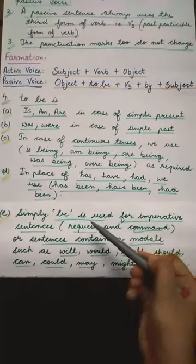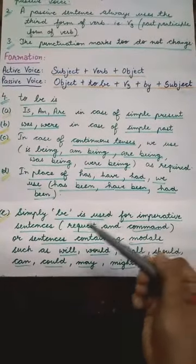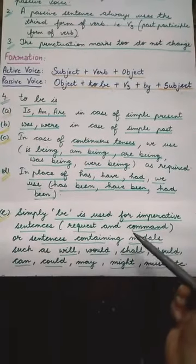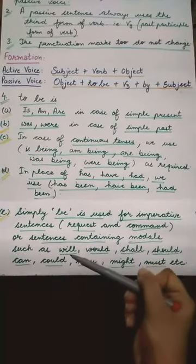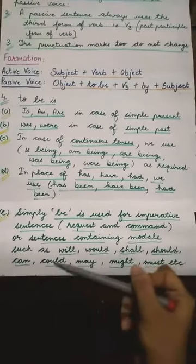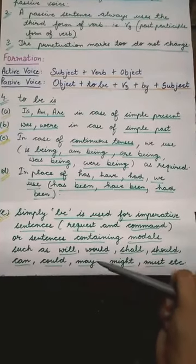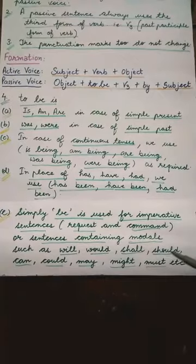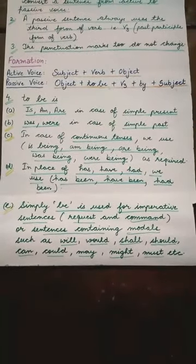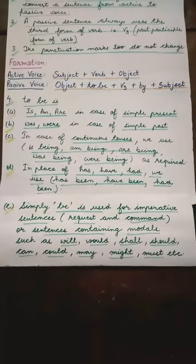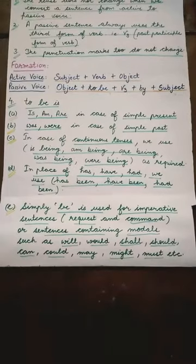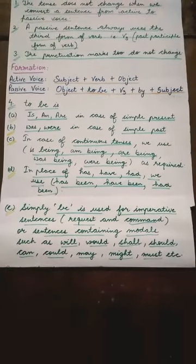Simply 'be' is used for imperative sentences, request and command, and sentences containing modals such as will, would, shall, should, can, could, may, might, must, etc. It means जब आप imperative sentences को, या फिर उन sentences को जिनमें modals दिये गए होंगे, उनको active से passive में change करोगे, तो आप वहाँ पर 'be' को use करोगे.